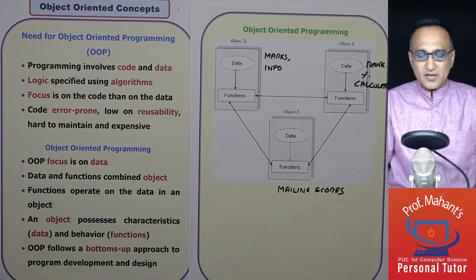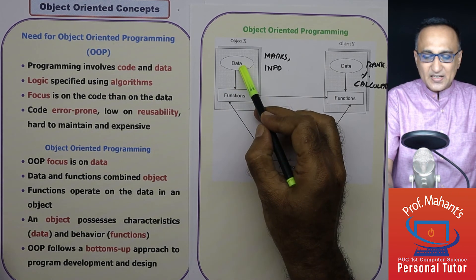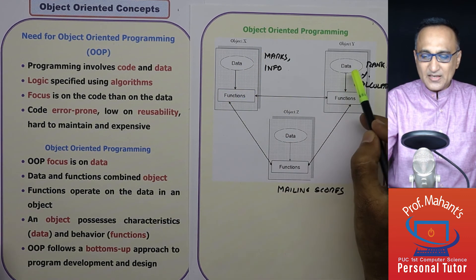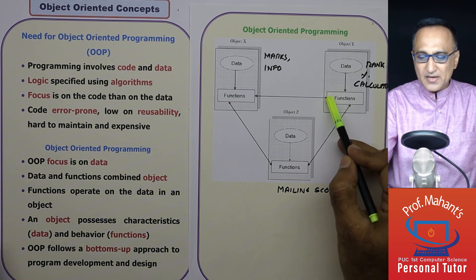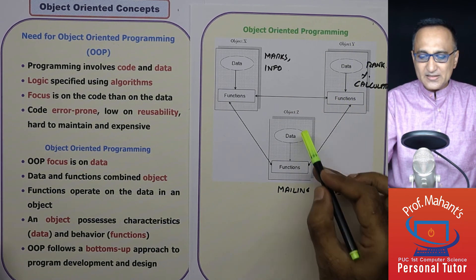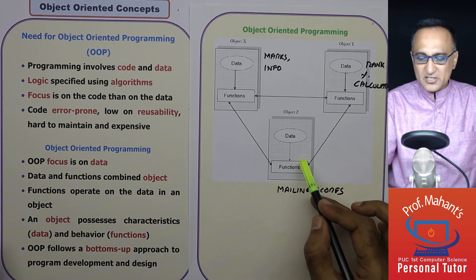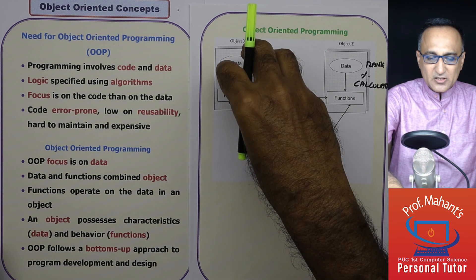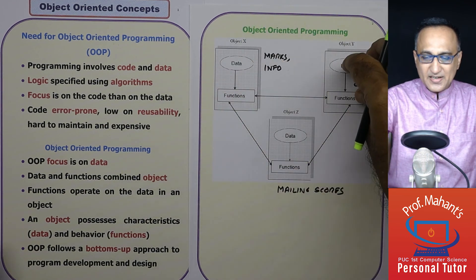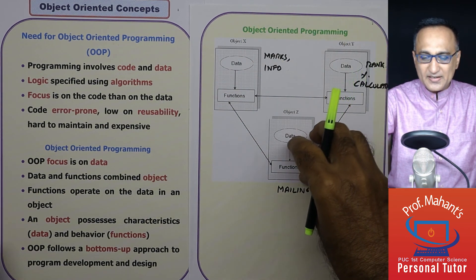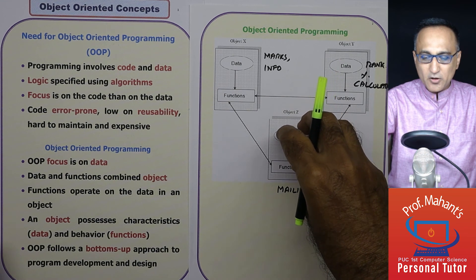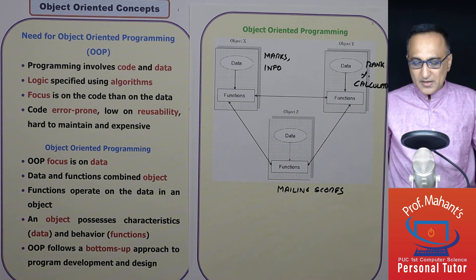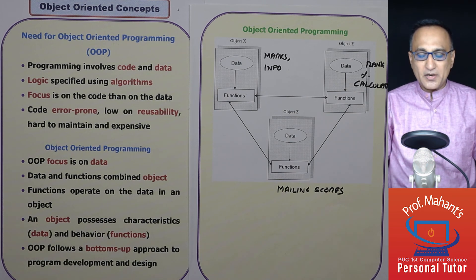Now a few things are important. This data can only be accessed by functions in object X. This data can only be accessed by functions in object Y. This data can only be accessed by functions in object Z. So here the data is local to object X, the data here is local to object Y and the data here is private or local to object Z. So this is what you really understand or mean by object oriented programming.